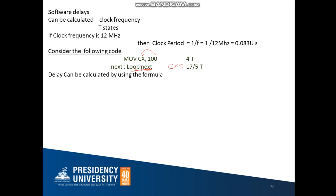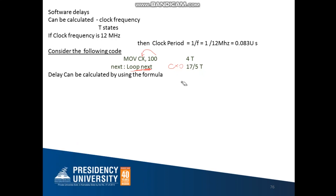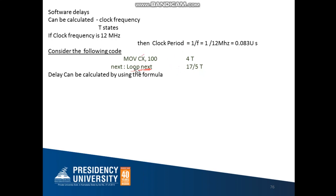The loop instruction will go to 'next'. Once it goes to 'next', it will decrement the value of CX. Once it decrements the value of CX, it checks if CX is equal to 0. If it is not equal to 0, it will go back to 'next' and execute the same loop until CX becomes equal to 0. We can see that MOV is an instruction.